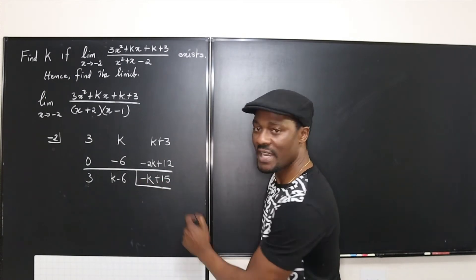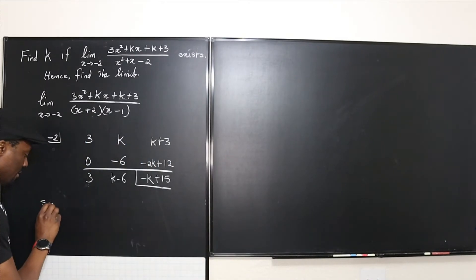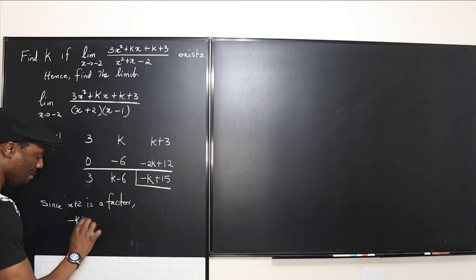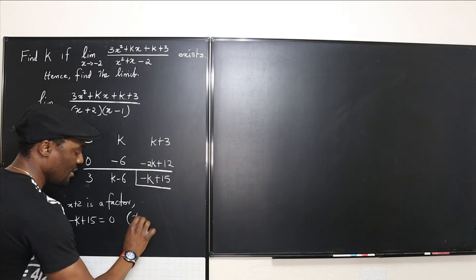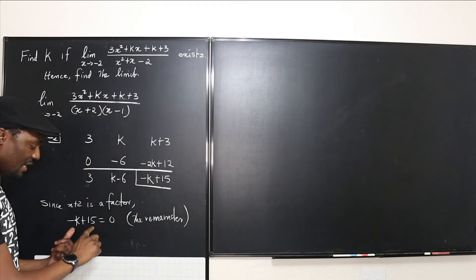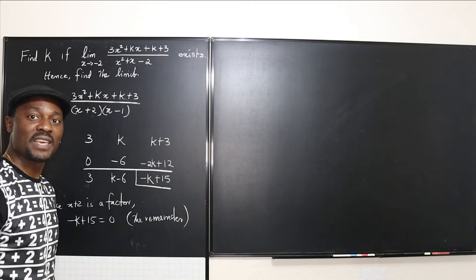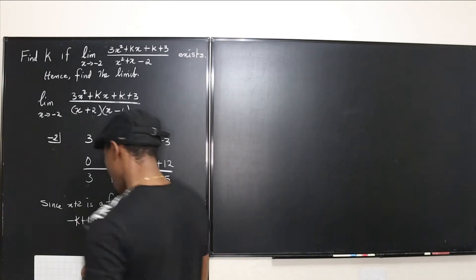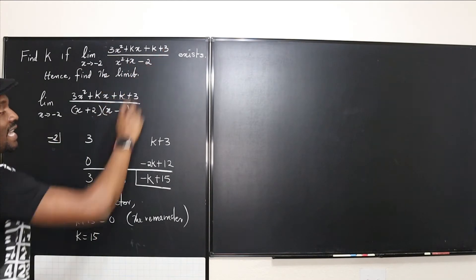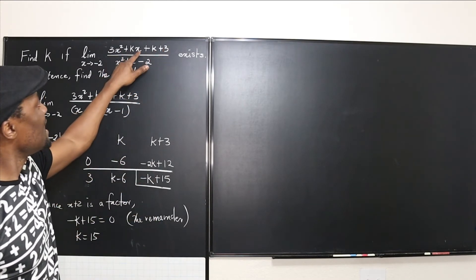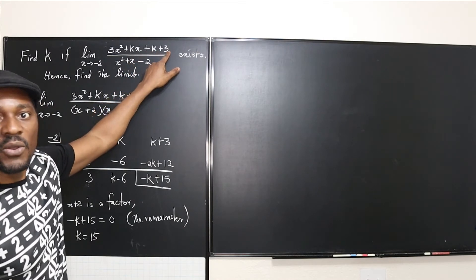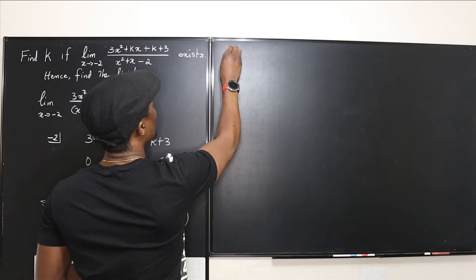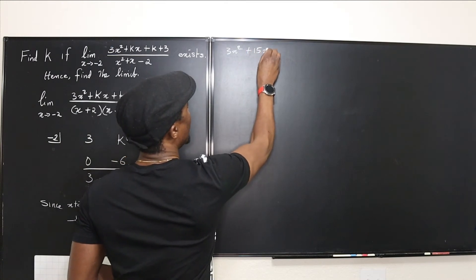Since (x + 2) is a factor, the remainder -k + 15 = 0, which gives us k = 15. Now we can go back and substitute k = 15 into the numerator: 3x² + 15x + (15 + 3) = 3x² + 15x + 18.